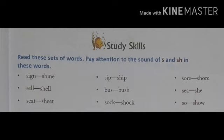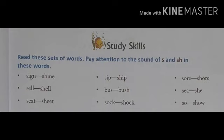Now let's read these words again with meaning. I will tell you the meanings of these words. S, I, G, N — Sign. Sign matlab, dastakat karna hota hai, kisi bhi cheez mein. Or Shine matlab hota hai chamakna. S, I, P — Sip. Sip matlab, chuski lena. And another one is S, H, I, P — Ship. Ship matlab jahaj — jo paani mein chalta hai.